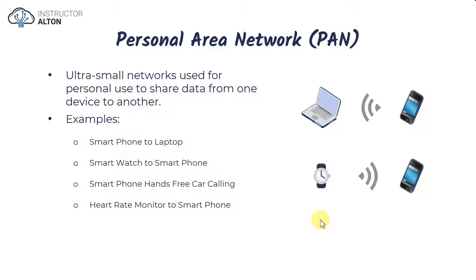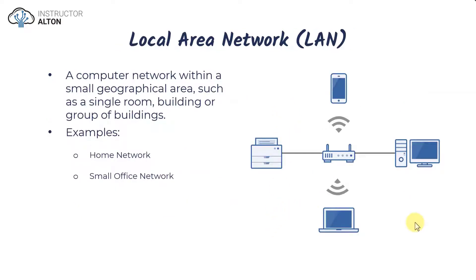Lastly, smart health monitoring devices — such as heart rate monitors worn on your chest or on your wrist like an Apple Watch — that connect to a smartphone, desktop, or tablet are also examples of a personal area network. That's the PAN.